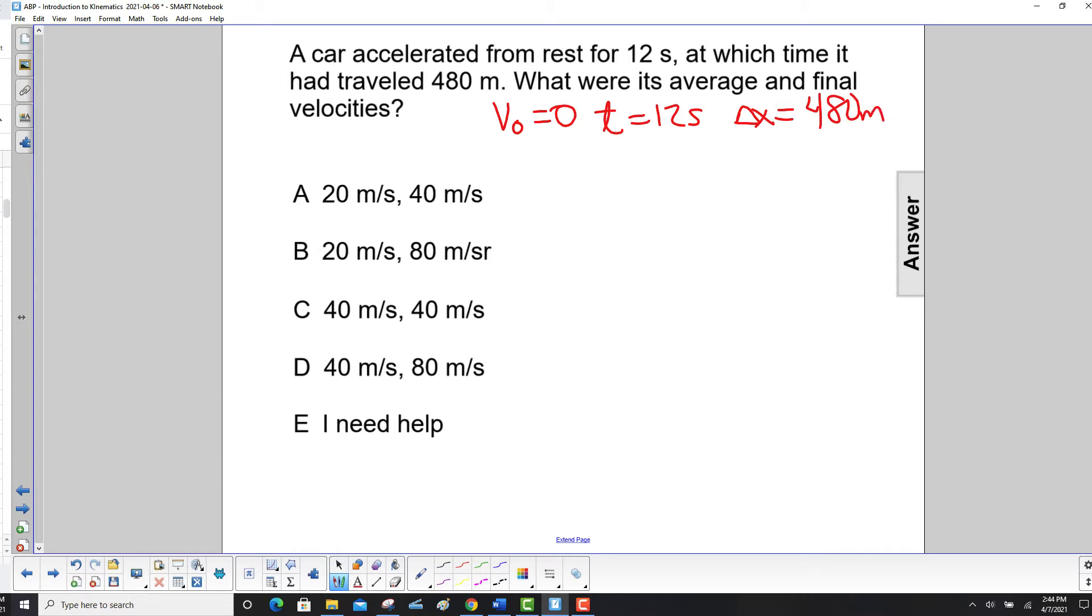What were its average and final velocities? So to find average velocity, we have this equation, average delta t.